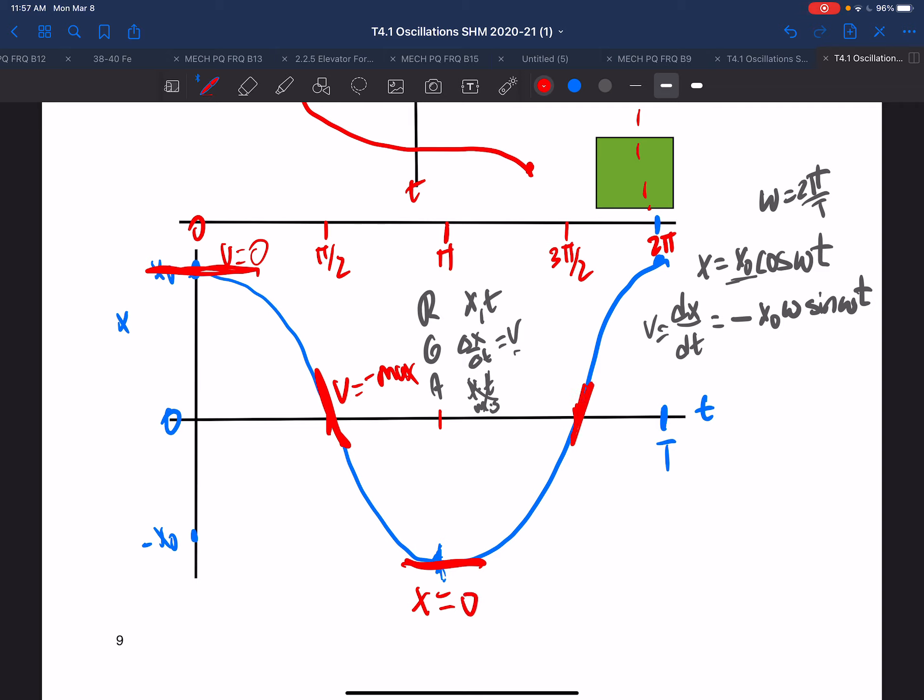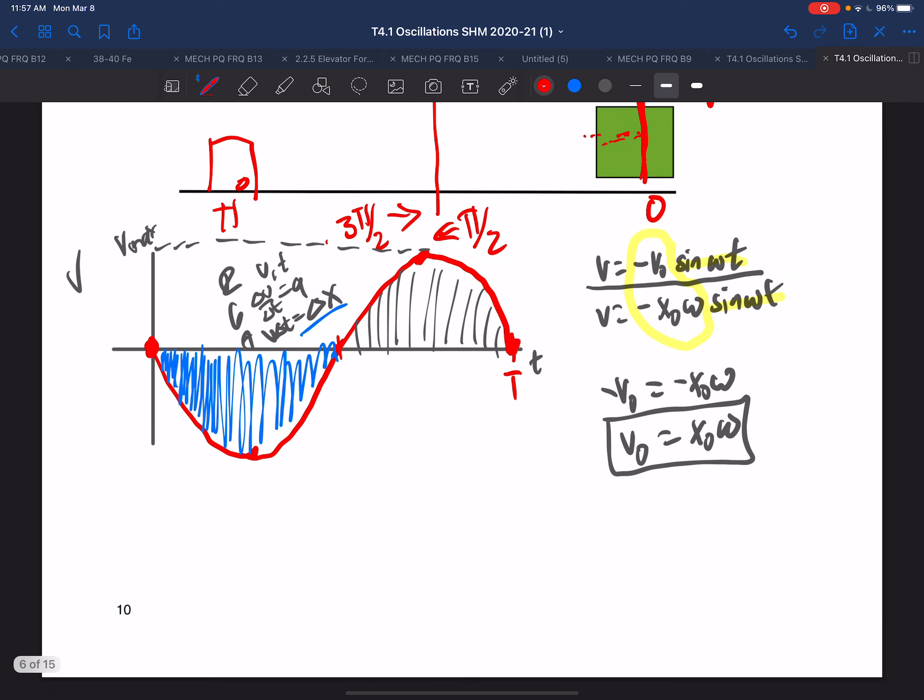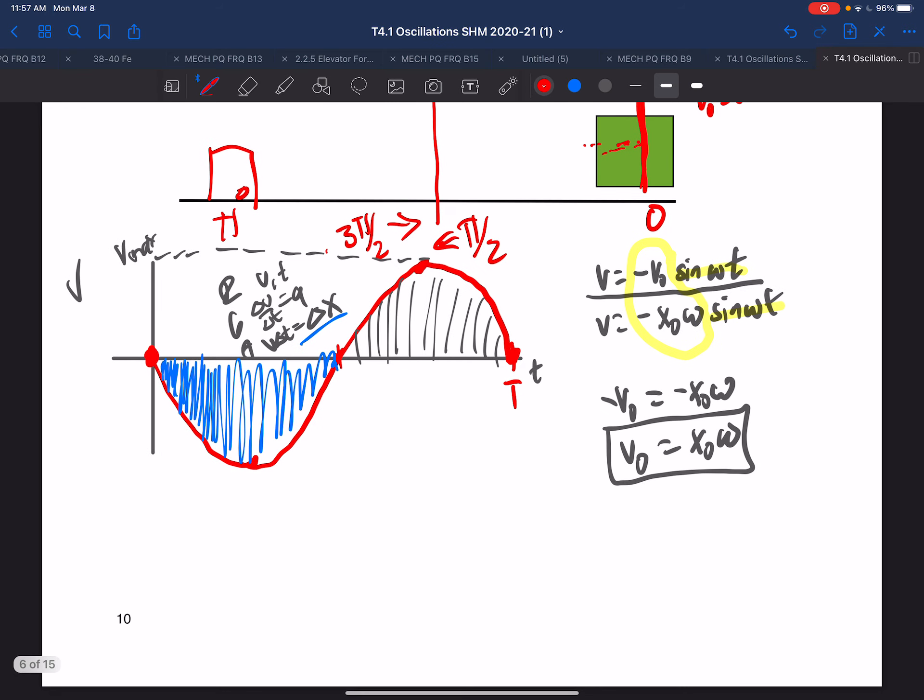And at 3π over 2, the velocity is a positive max. And the slope at the end is zero. And you'll notice that's exactly what we see over here. We have a velocity of zero to begin, and then we get to our negative maximum velocity, and then we have a zero again on our positive max, and then we're back at zero.